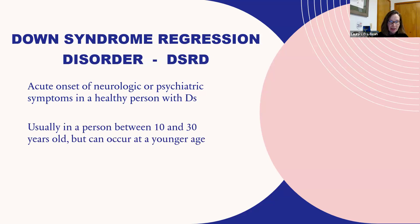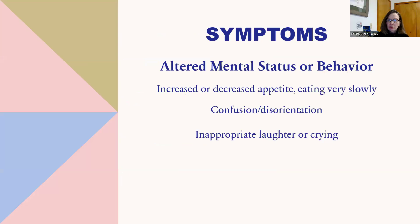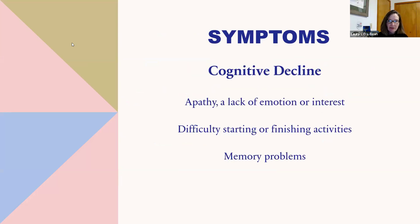Usually the person is between 10 and 30 years old, but it can occur at younger ages. We think of DSRD when no other cause can be found after an extensive medical evaluation. The symptoms can include altered mental status or behavior, such as a change in appetite or eating very slowly — like taking an hour to finish a meal. There can be confusion or lack of awareness of where you are, and there can be inappropriate emotions, such as inappropriate laughter or crying. There can also be signs of cognitive decline, like a lack of interest in the world around you, difficulty starting or finishing activities, or memory problems.